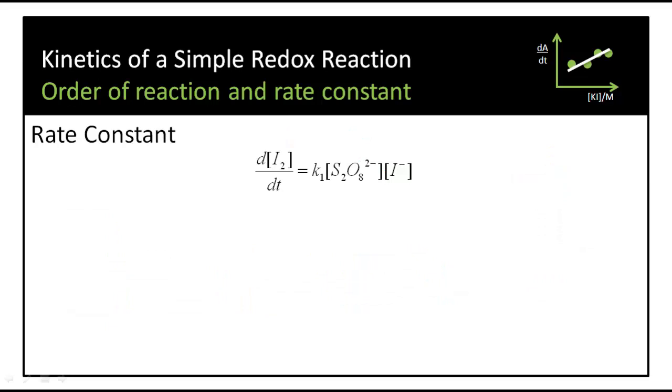Now we've confirmed the orders of reaction. This rate law is the equation of a straight line graph. The plot of rate against the product of the concentrations will give us a straight line whose slope is K1.